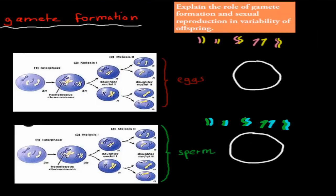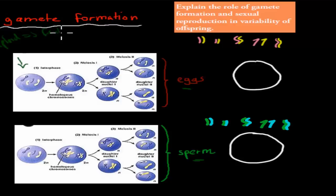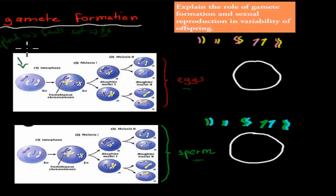Gamete formation is the idea that we have eggs and sperm being produced from our original cell. Our original cell had a diploid number of chromosomes, which means it has a full set. In our case, that means we have 46 chromosomes. We'll use the example of the human in this video. We have 46 chromosomes, which come in homologous pairs — always in sets of two. So we have 23 of these sets of two in our original cell.